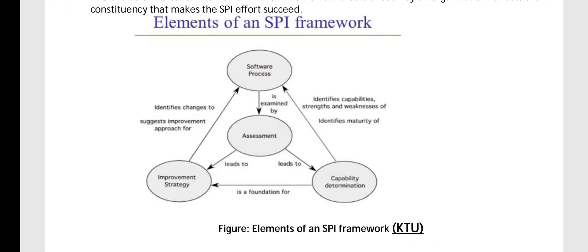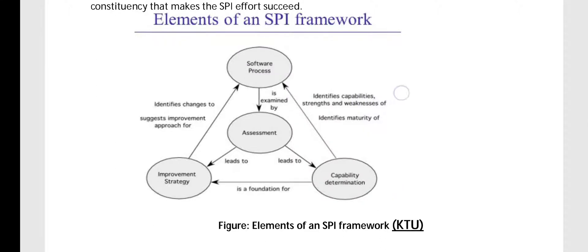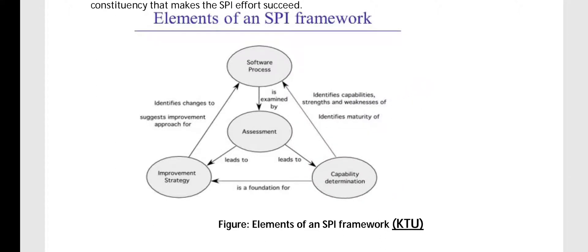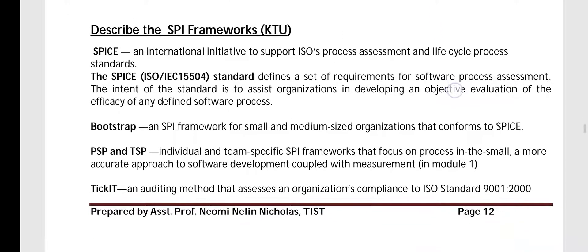As shown in the figure, a software process is examined by assessment. Assessment leads to improvement strategy and capability determination. Capability determination is the foundation for improvement strategy — it identifies the capabilities, strengths, weaknesses, and maturity of software processes. The improvement strategy then finds the changes needed to improve the software process.